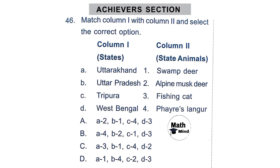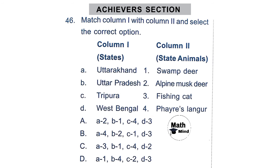Question 46: Match Column 1 with Column 2 — State Animals. A: Uttarakhand — Alpine Musk Deer. B: Uttar Pradesh — Swamp Deer. C: Tripura — Phayre's Langur. D: West Bengal — Fishing Cat. Option D is correct — all matches are correct.